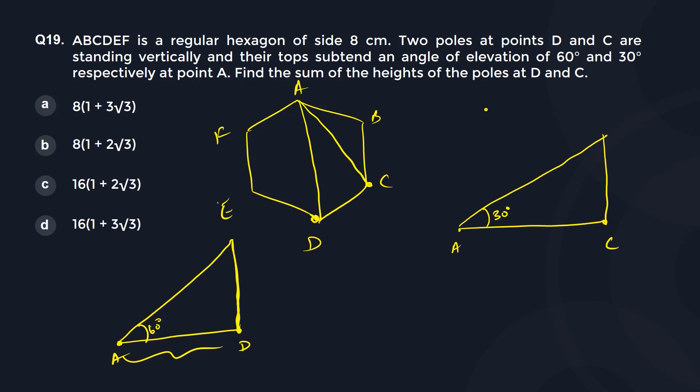Find the sum of the heights of the poles at D and C. Let us call this as height 1, let us call this as height 2. So if this is your X, this is your Y. This is your Y. AC is your Y.